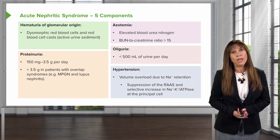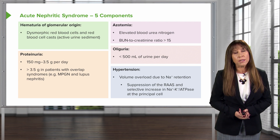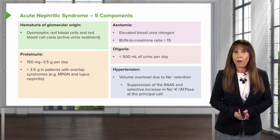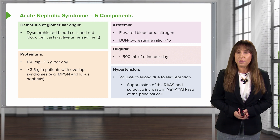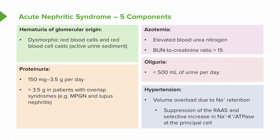And finally, hypertension. Patients who have acute nephritic syndrome will manifest with higher blood pressures. This is typically because they are volume overloaded — these patients are retaining sodium. Interestingly, they actually have suppression of the renin-angiotensin-aldosterone system, and essentially have an increase in the sodium-potassium ATPase at the principal cell, which is responsible for that sodium uptake leading to volume overload.